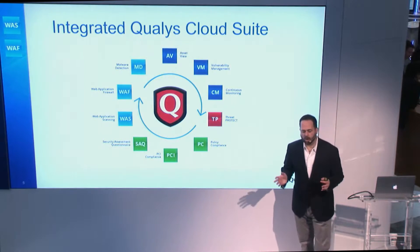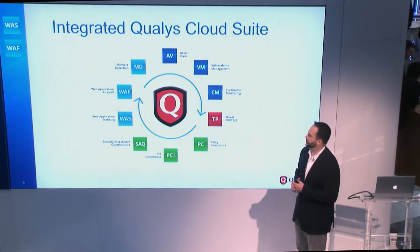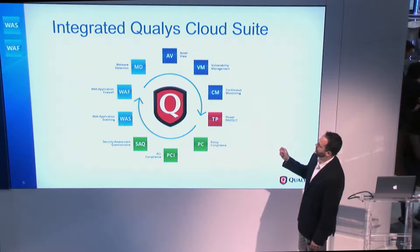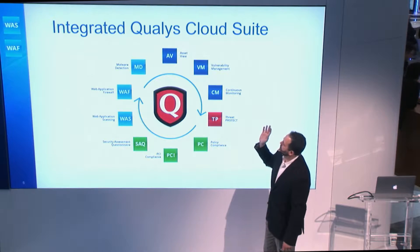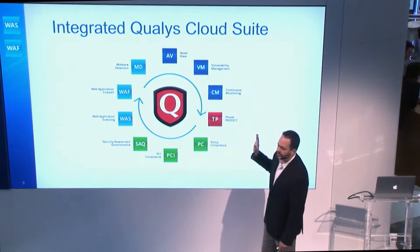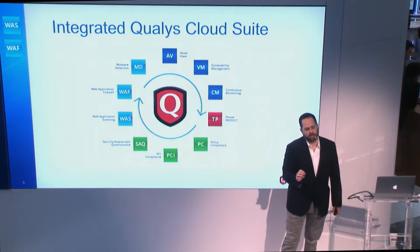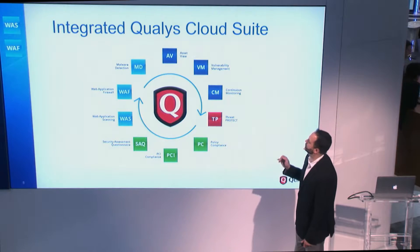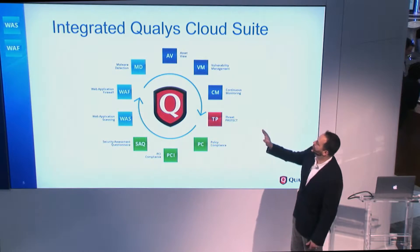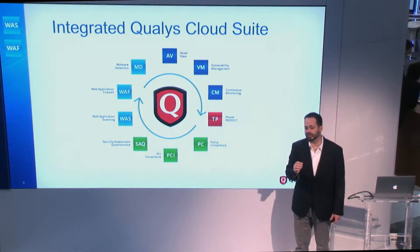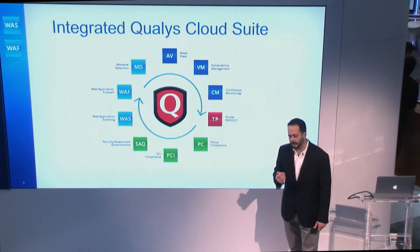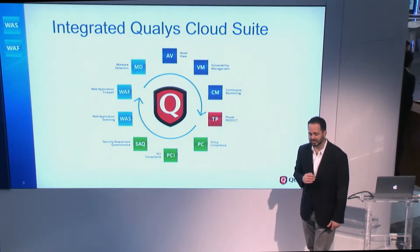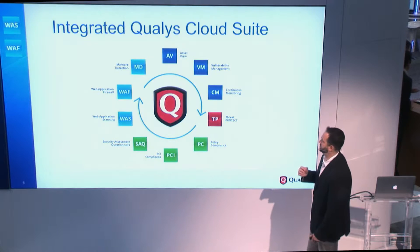If we look at Qualys, we do something a little bit unique — we give you a holistic approach to information security. It starts with asset view, and we are cataloging and acting as your authoritative source for asset information. Beyond that, we're also able to discover assets, and not a lot of companies out there are doing a really good job at discovering and cataloging those assets while also making sure they are secure at the same time.